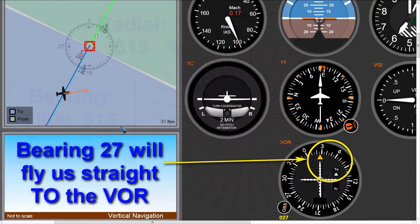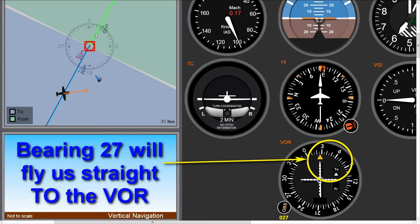Let's do an example. Here we are flying in a certain direction and here is a VOR that we tuned in our radio. I now rotate the OBS knob because my goal is to fly towards this VOR. I rotate the button until I see a vertical needle and a To indicator. In that case I read out the bearing, which in this example is 27. That means a bearing of 27 will bring me straight to the VOR. Just rotate the button, needle vertical, watch for the To indicator, and then read out your bearing.